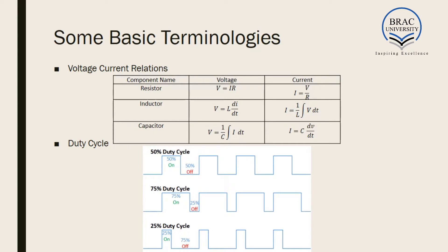Before we move into the detailed discussion of DC-DC converters, we have to know about certain basic terminologies and equations. We know the basic voltage-current relations of a resistor — Ohm's law: V = IR or I = V/R. For an inductor, V = L·di/dt and I = (1/L)∫V dt. Similarly for a capacitor, V = (1/C)∫I dt or I = C·dV/dt. We must remember these basic driving equations for solving any circuit.